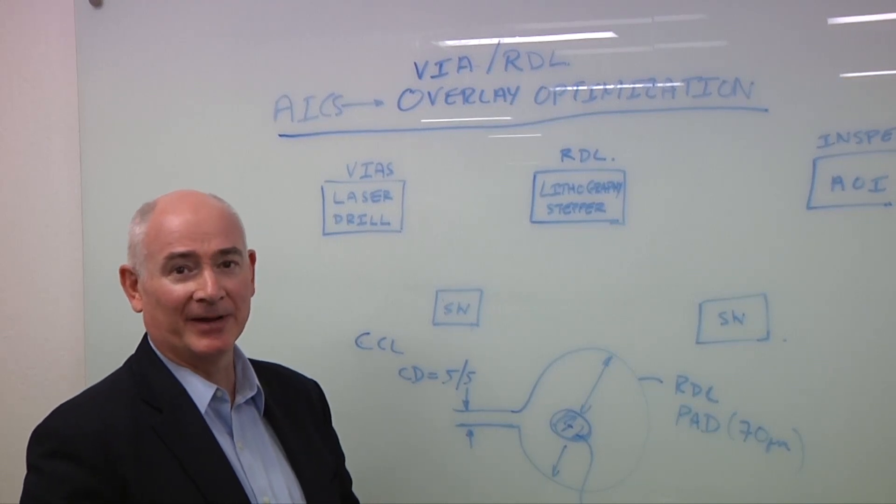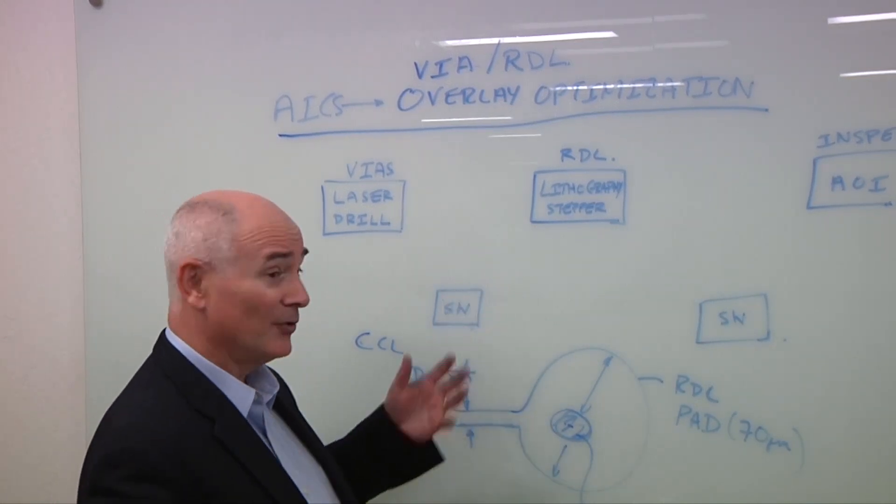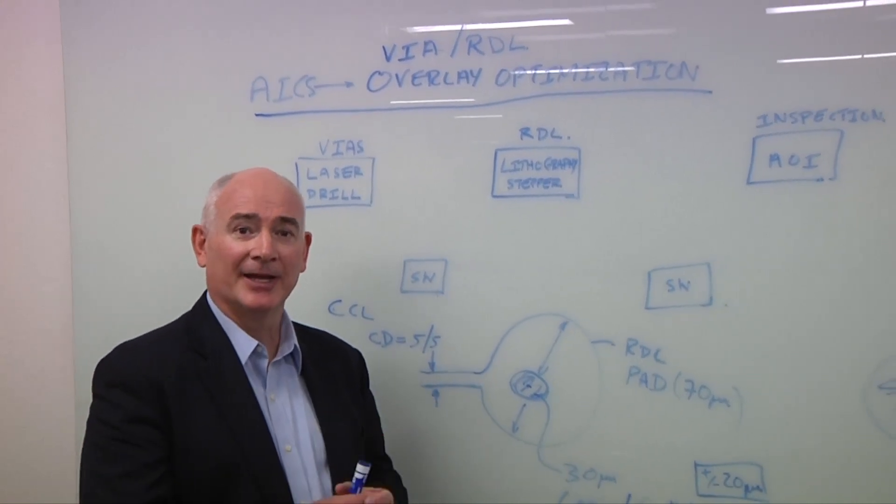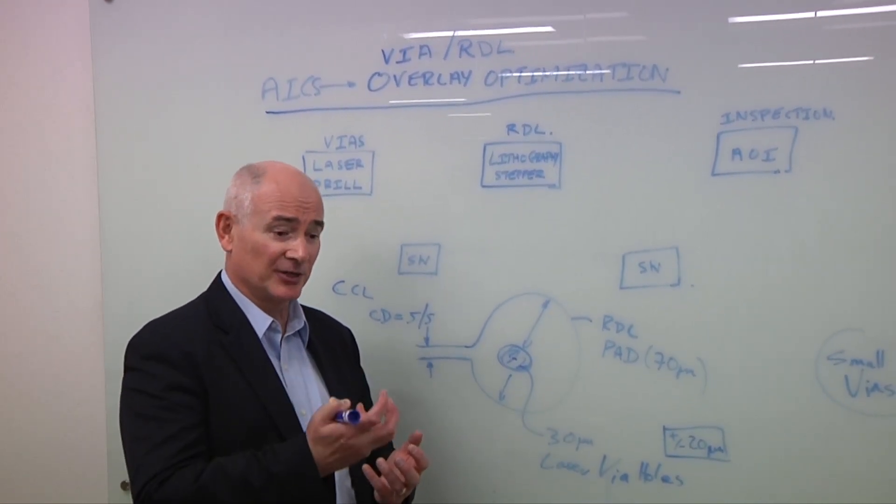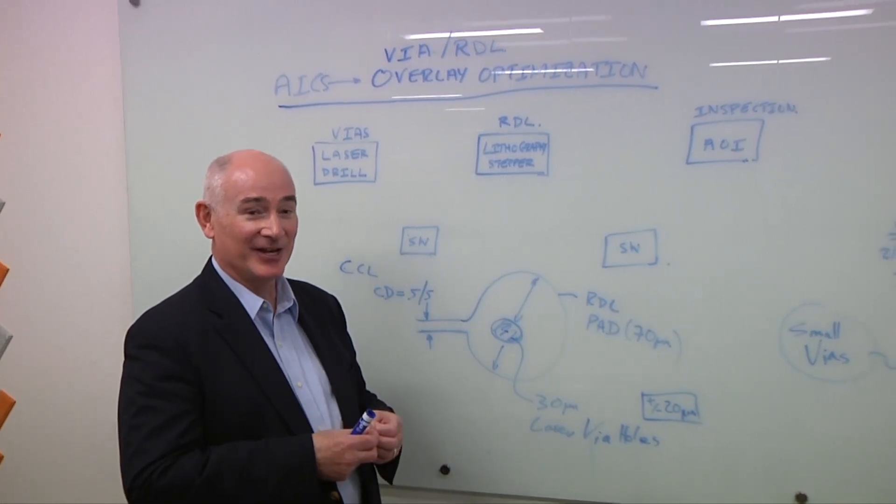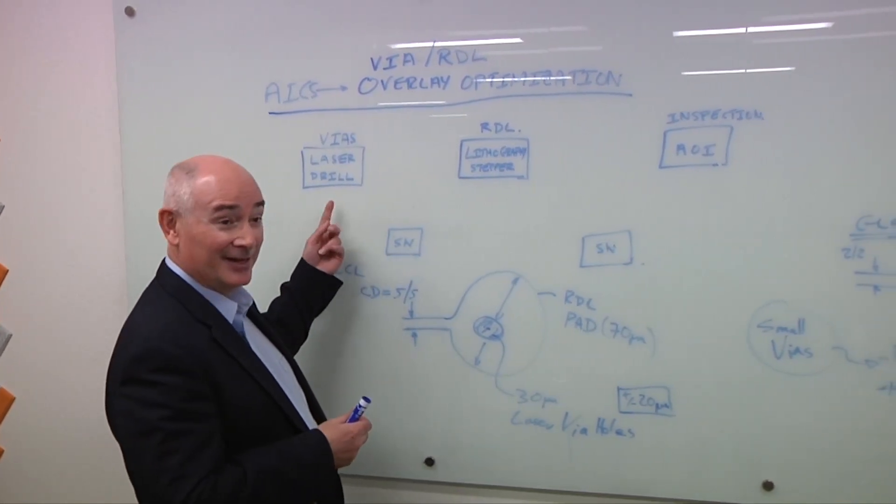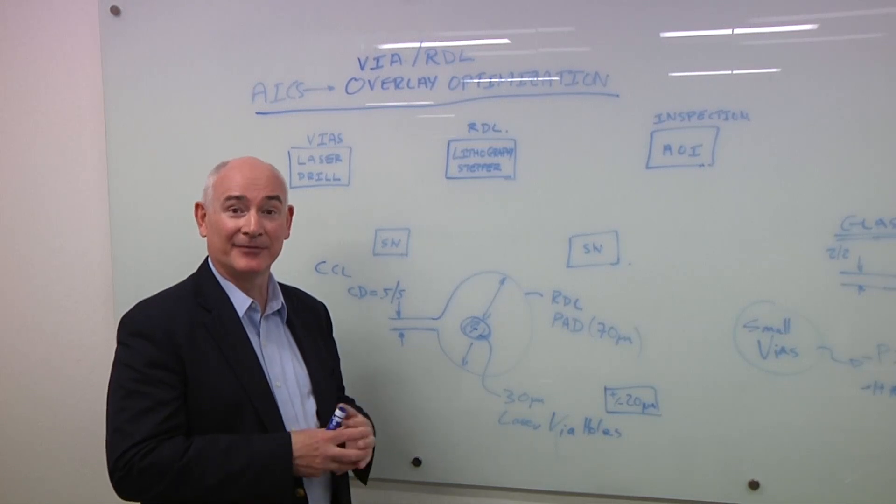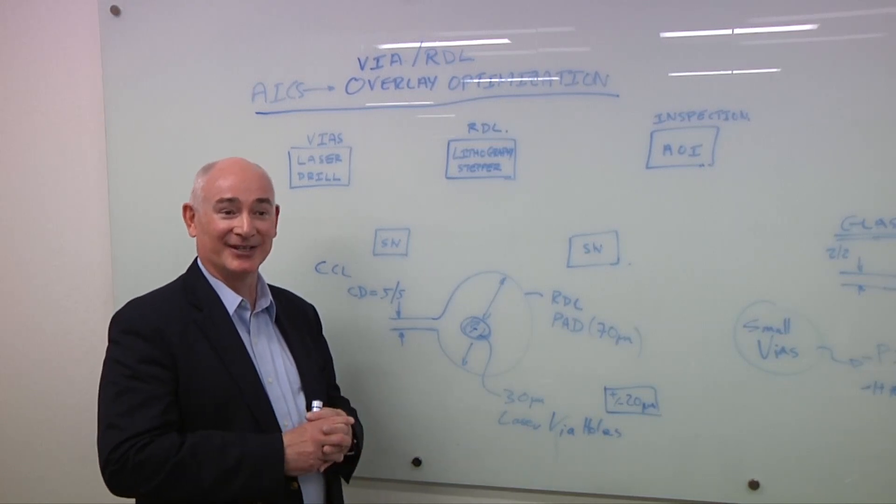We have the substrate, like I mentioned before, moving around during the thermal cycling, but also the via layer. We're talking about aligning an RDL structure to a via layer. And the via itself is defined using a laser drill tool. And the laser drill tool punches holes, basically, in the ABF. Very unlike most processing you're familiar with.